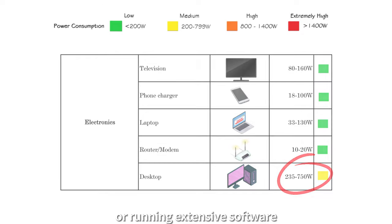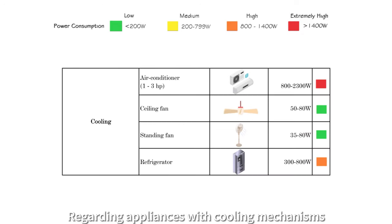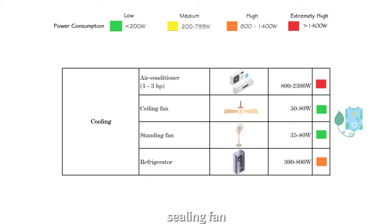Regarding appliances with cooling mechanisms, air conditioners of 1 to 3 horsepower have a power rating of 800 to 2300 watts. Compared to air conditioning, ceiling fan and standing fan use significantly less power.